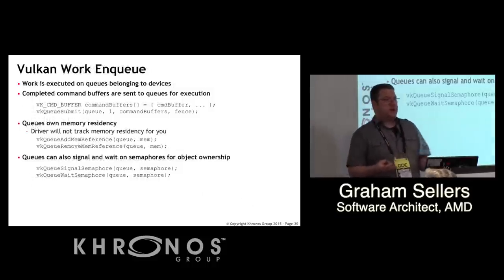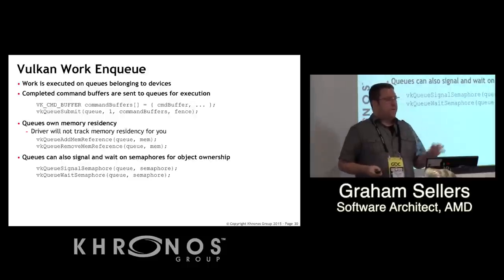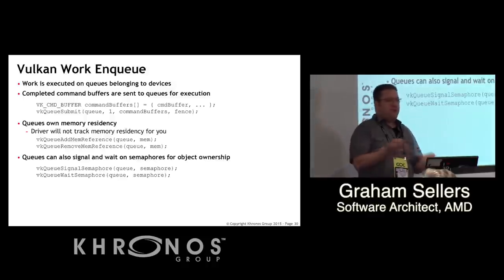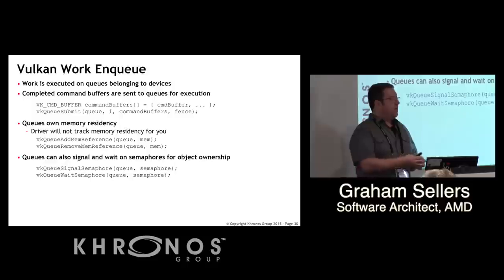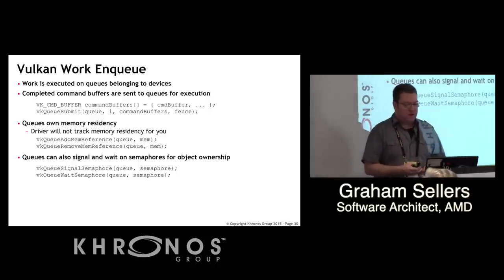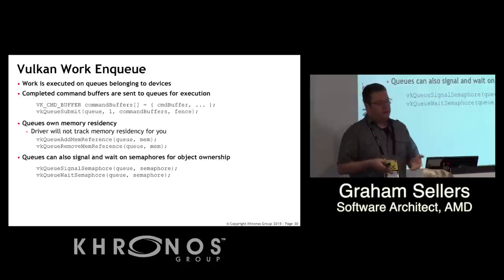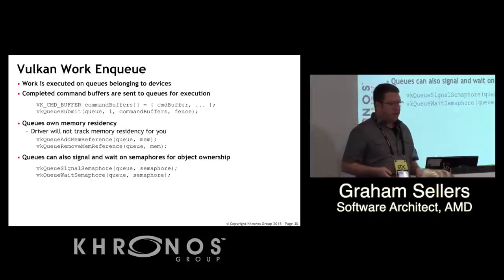Once you have command buffers batched up with resources bound, you submit work into queues which schedule it onto the GPU independently of each other. Memory residency is per-queue — you use addMemRef and removeMemRef on queues to indicate which memory objects will be accessed, implicitly making all resources in that allocation ready to use. For resources shared across multiple queues you use semaphores — one queue signals when it finishes writing to a resource, and another queue waits on it before using it.